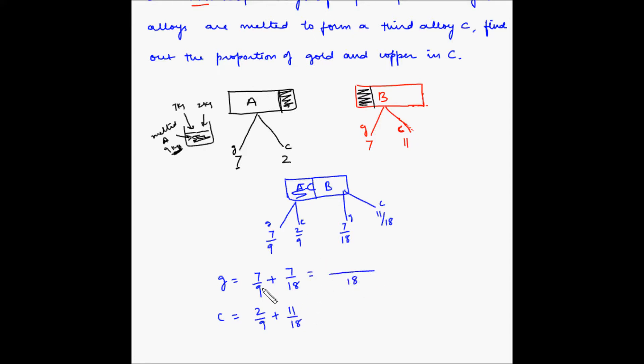LCM becomes 18. 9 2s are 18 and 2 multiplied by 7 is 14 plus 7. This is equal to 21 by 18. 3 6s are 18, 3 7s are 21. So this is 7 by 6.